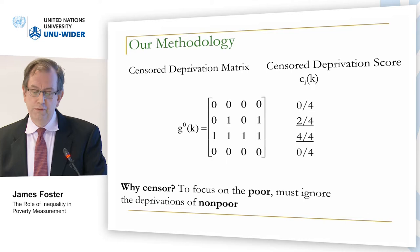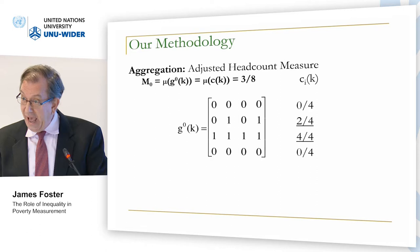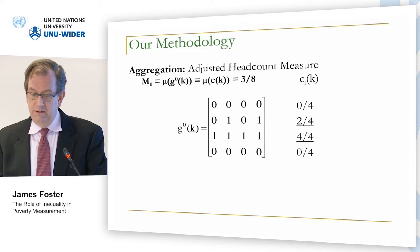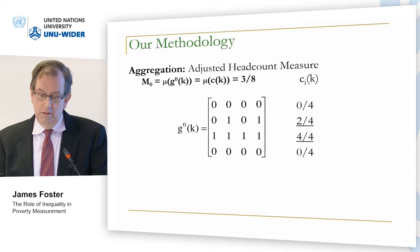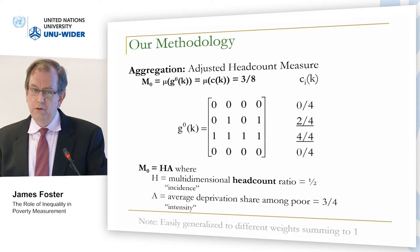Aggregation to get the adjusted headcount ratio can be done in three ways. First, take the censored deprivation matrix, add up the entries and divide by the number of entries — that gives you six out of sixteen, or three-eighths. Second, average the deprivation scores across all people, and you'll get six out of sixteen once again. Alternatively, look just at the poor folks, take their average deprivation share — their intensity — multiply by the headcount ratio, and you get the same number.